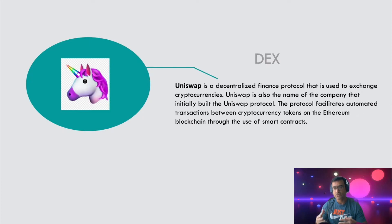Now let's talk about DEX — decentralized exchange — and we will see why a DEX is needed when there is already an exchange like Coinbase and a software wallet where you can buy and sell. So why DEX? Uniswap is a very famous DEX. There are others, but we will talk about Uniswap for demonstration purposes. It's a decentralized finance protocol used to exchange cryptocurrency — basically it enables you to buy and sell.